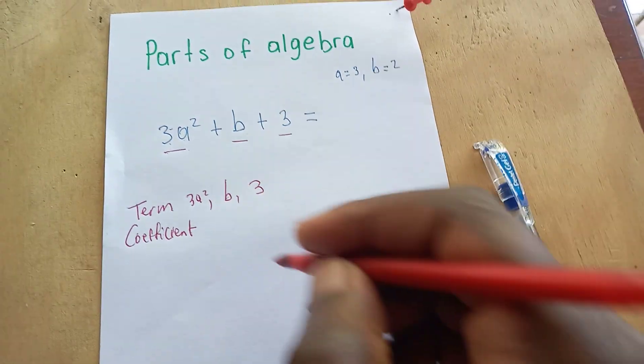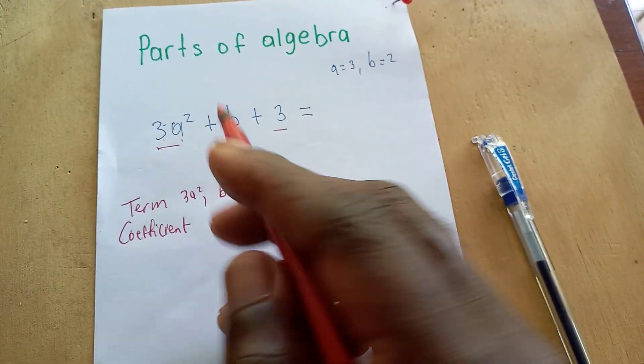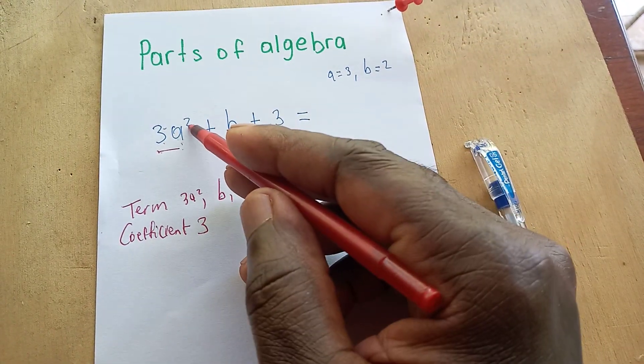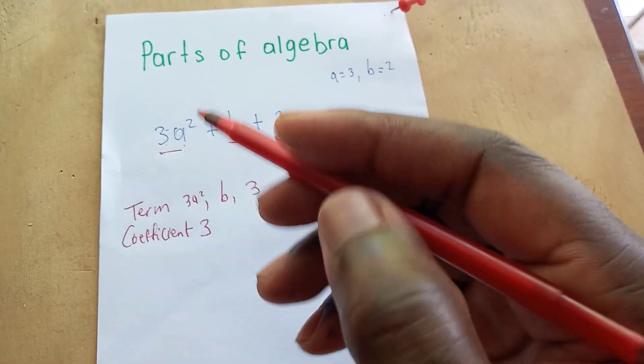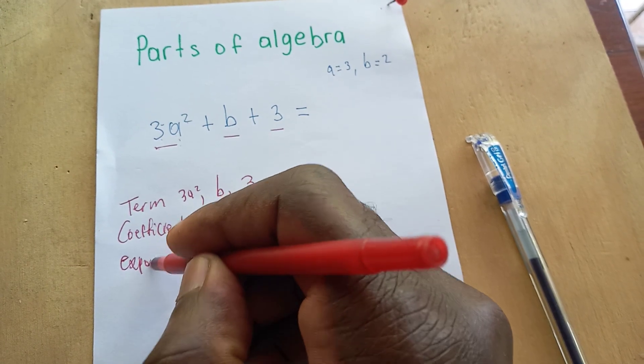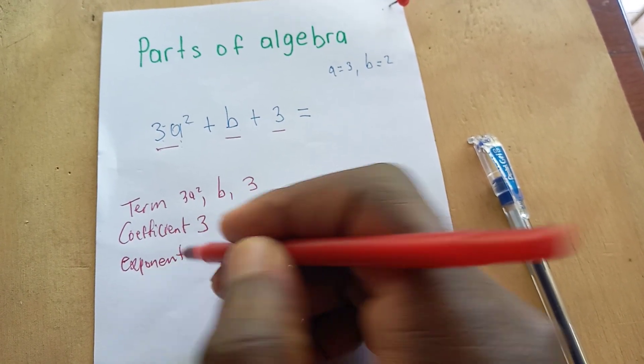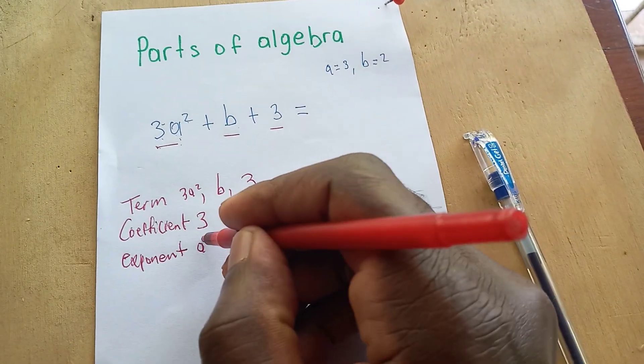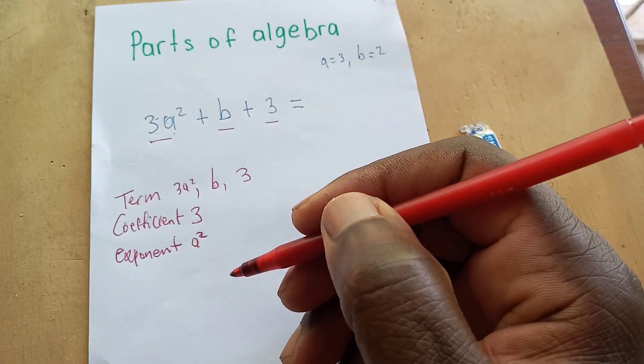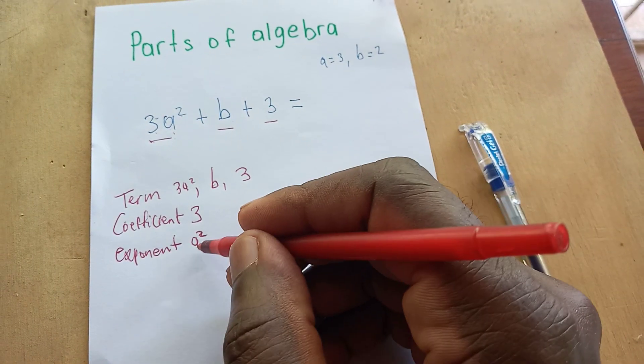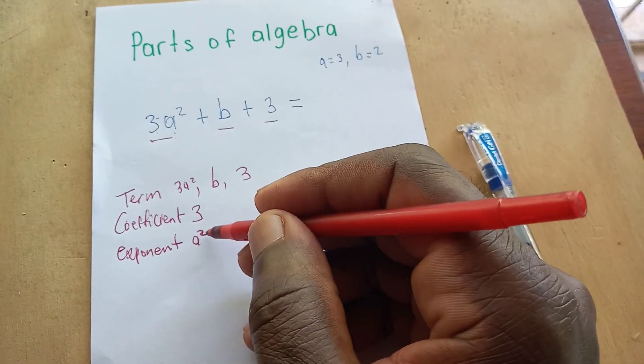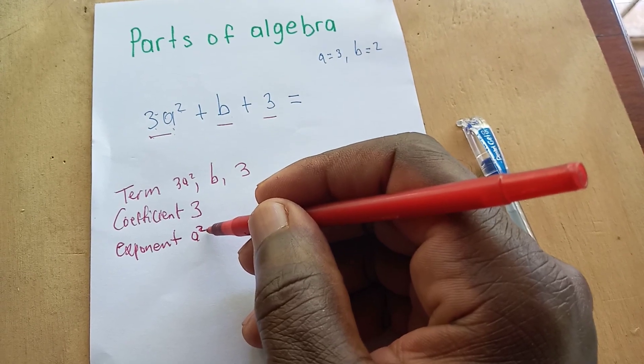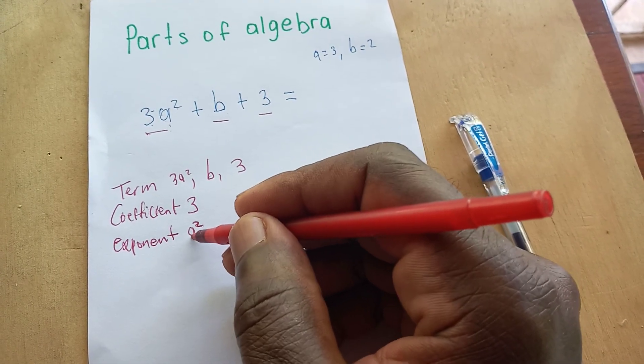Then we have this up here, which is the exponent or power - the exponent would be 2 there, a to the second power. What this is saying is that you should multiply a two times by itself. That's what the exponent is saying. The exponent is indicating to you how many times you should multiply the base number by itself.